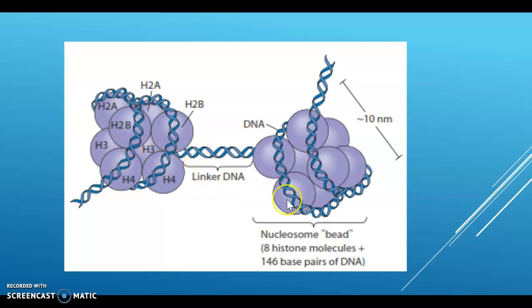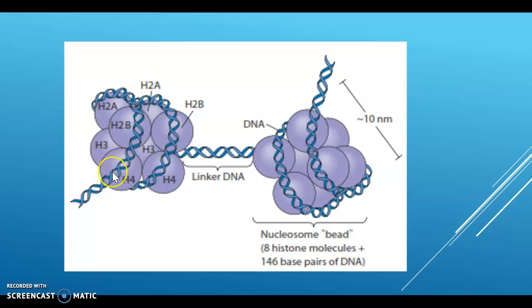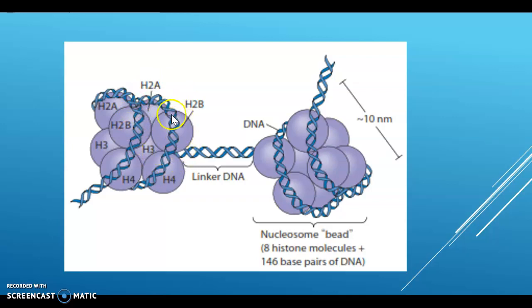The H1 molecules are thought to be associated with the linker DNA. The other four core histone proteins have a common protein fold known as the histone fold. These are rich in the amino acids lysine and arginine residues, which carry a positive charge and help to counterbalance the negative charge due to the phosphate groups in the DNA backbone. This electrostatic interaction helps to stabilize the overall histone-DNA assembly. The formation of the nucleosome is the first step in packaging the nuclear DNA.